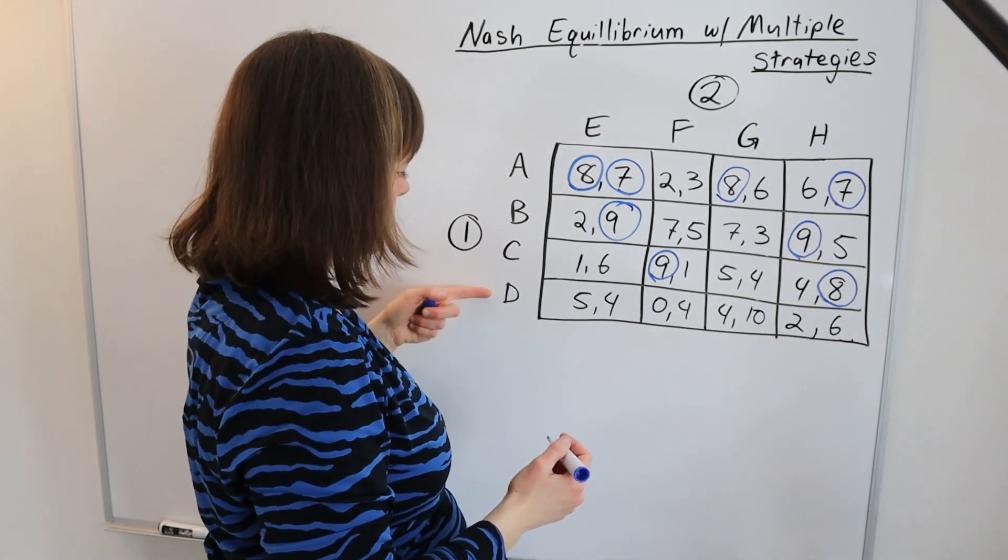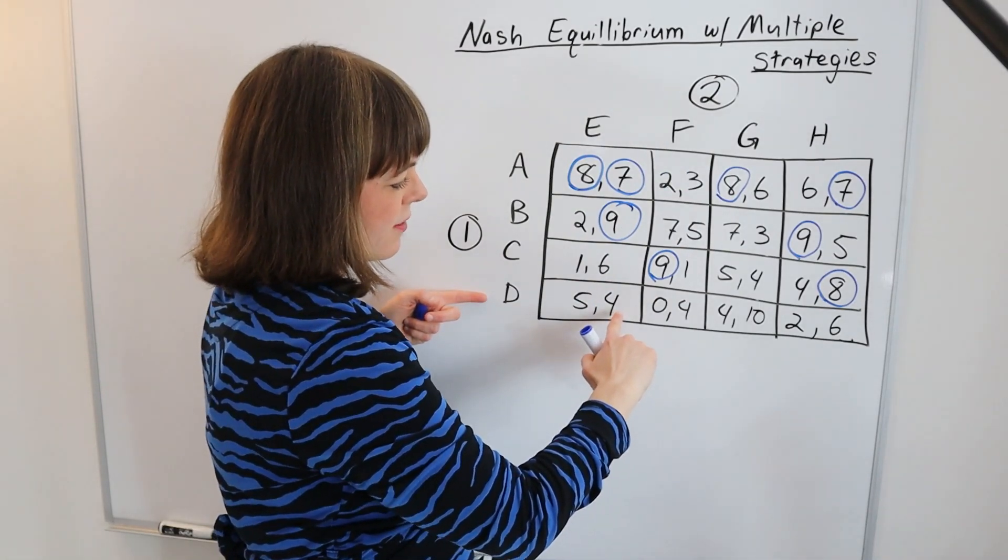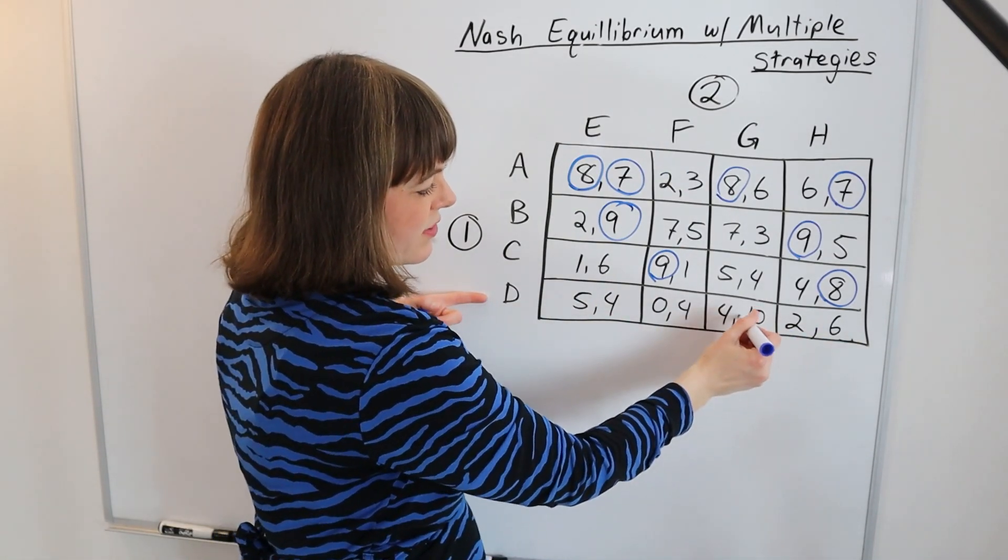If player one goes D, player two will prefer between the four, the four, the ten, and the six, and will definitely prefer the ten.